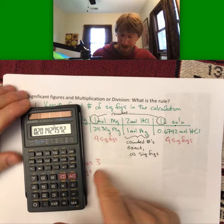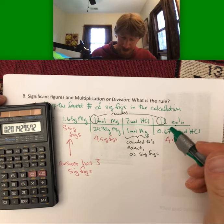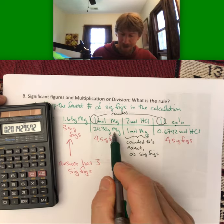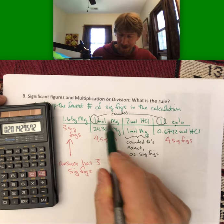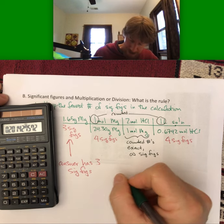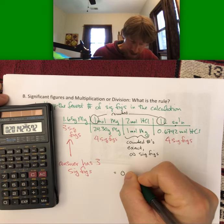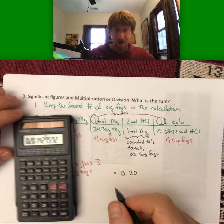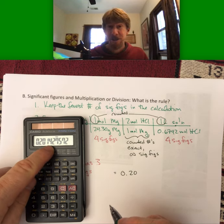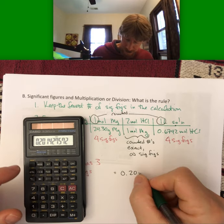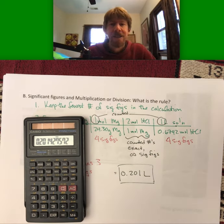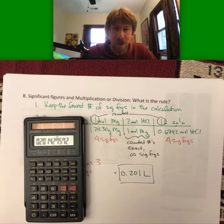My answer here will be in units of liters because my grams of magnesium cancel, moles of magnesium cancel, and moles of HCl cancel. My answer is 0.20 - well, we said our answer was to three sig figs. This next digit's a four, so we don't have to round anything. Our final answer to three sig figs is 0.201 liters.